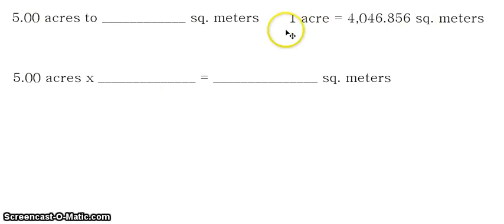And our conversion factor is now written here. Again, our unit that will be canceled is placed in the denominator and our desired unit here. So that is now 4,046.856 square meters per one acre.